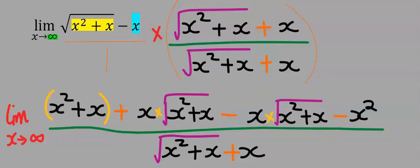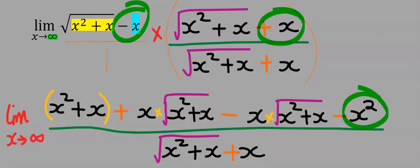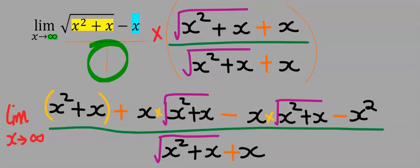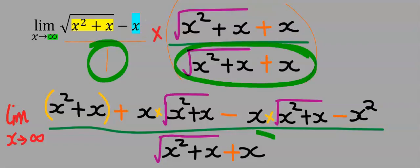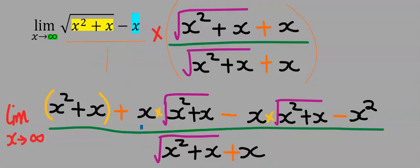At the numerator, minus x will multiply plus x and you're going to get minus x squared. While one at the denominator will multiply everything here, and it will return — next, this plus will take away this minus.